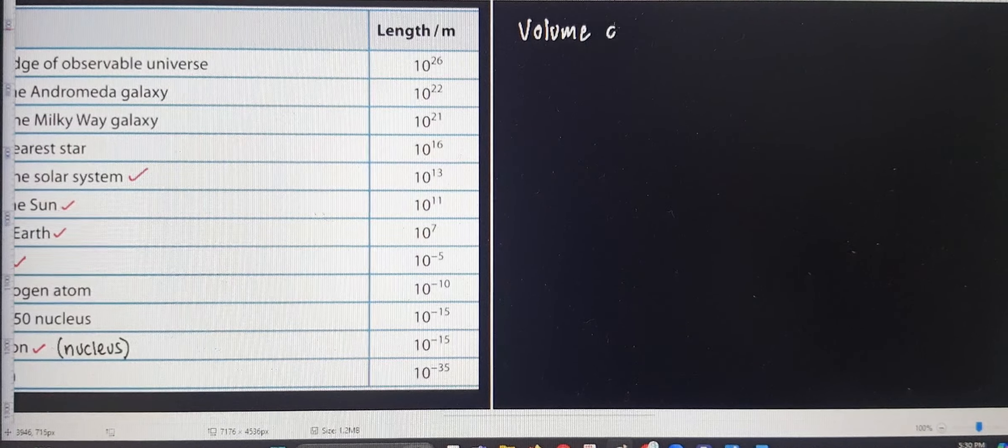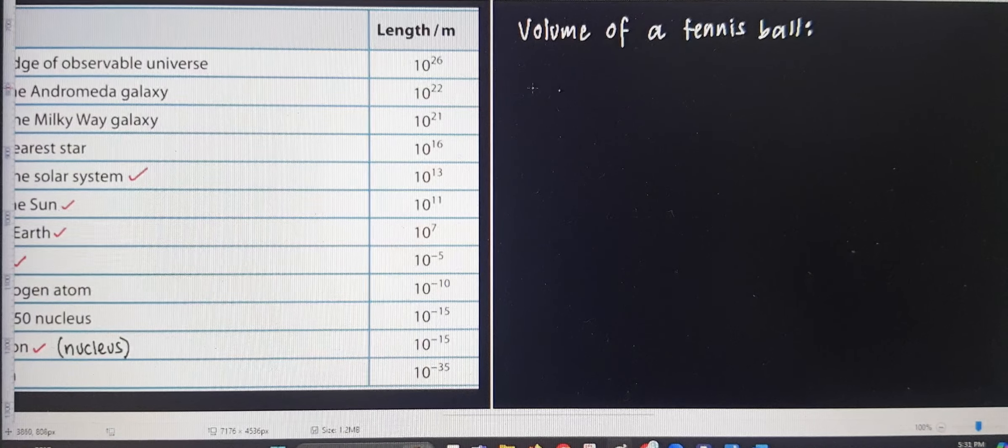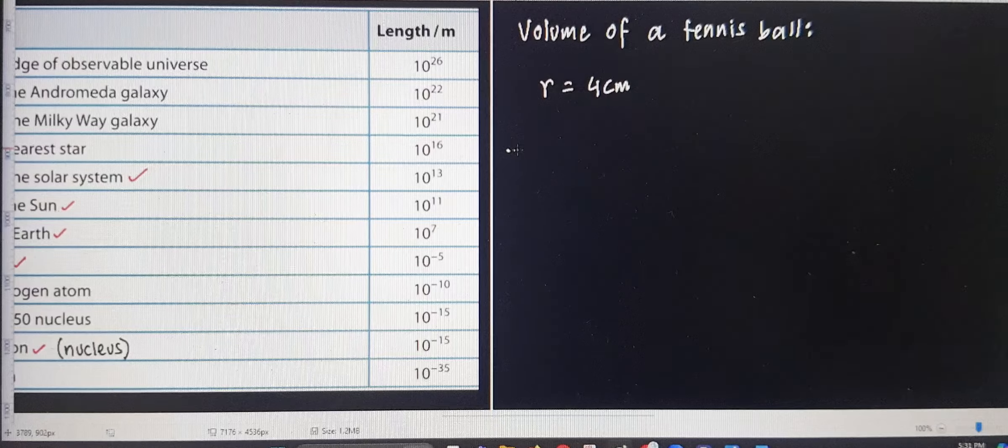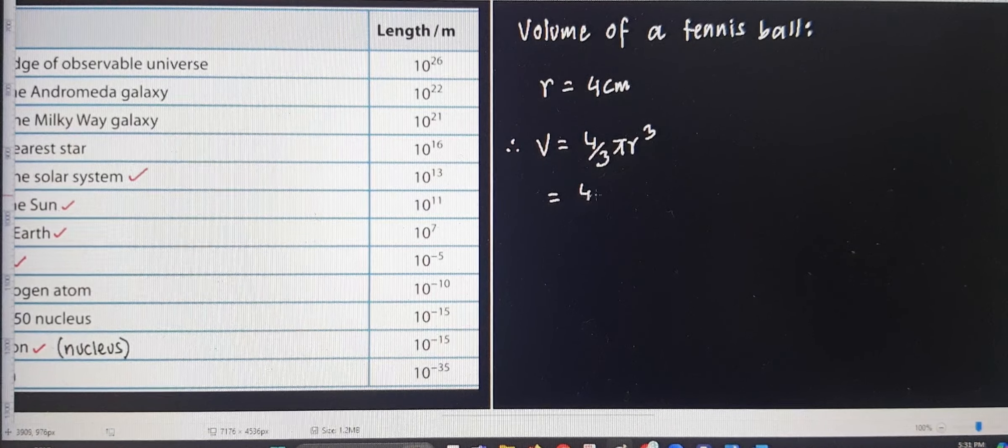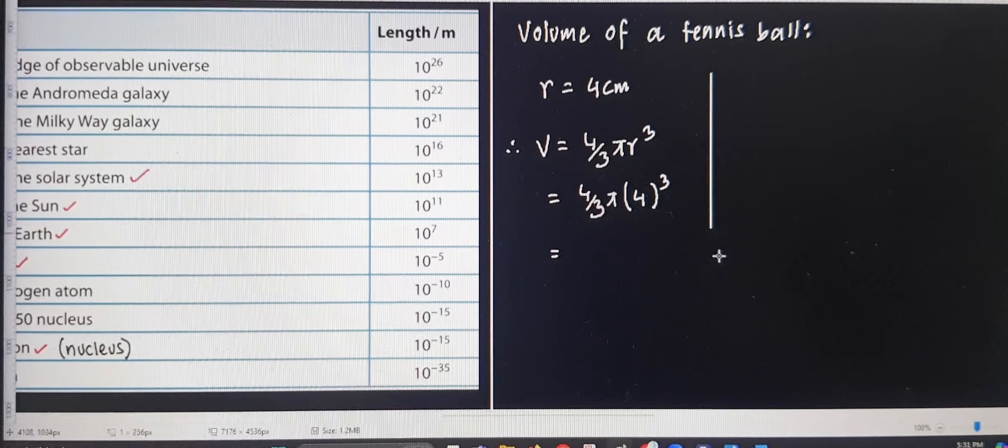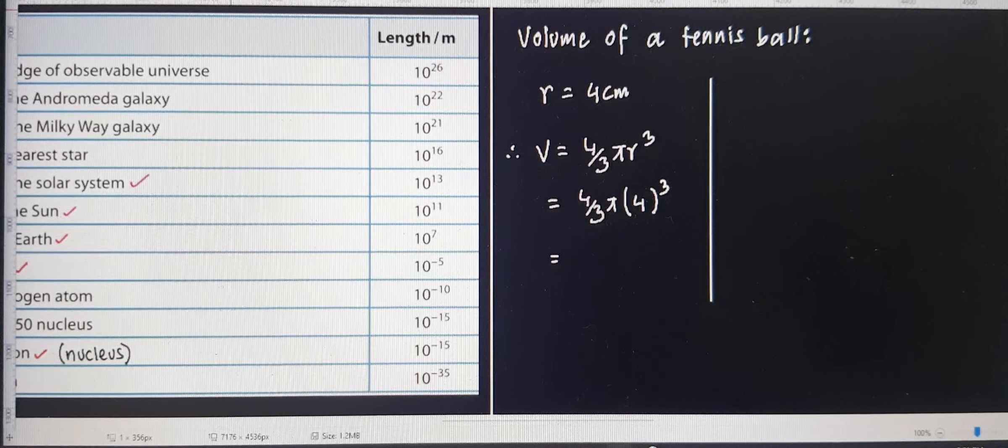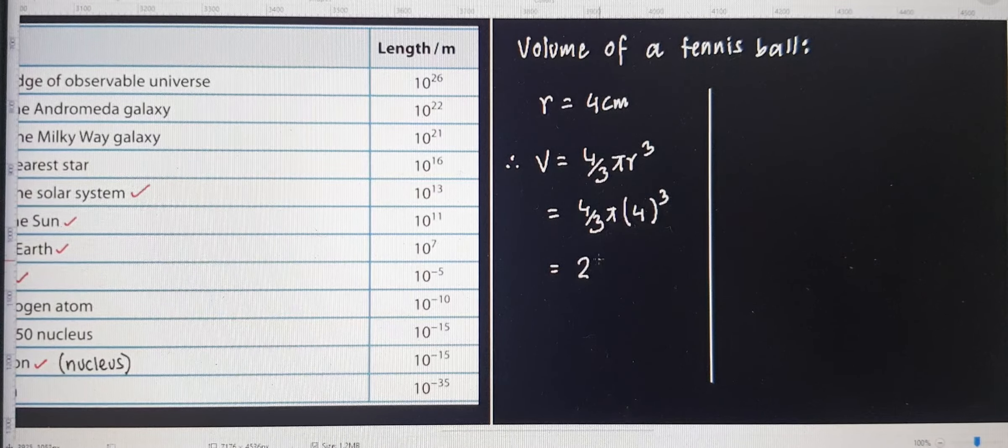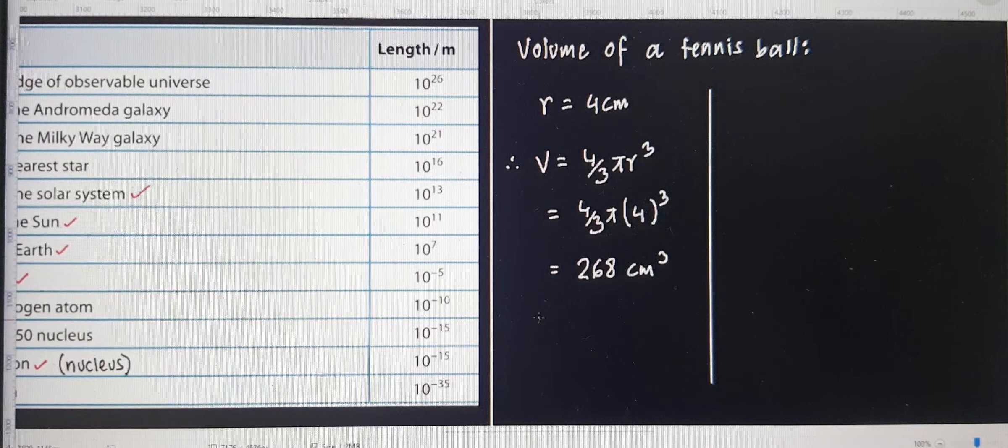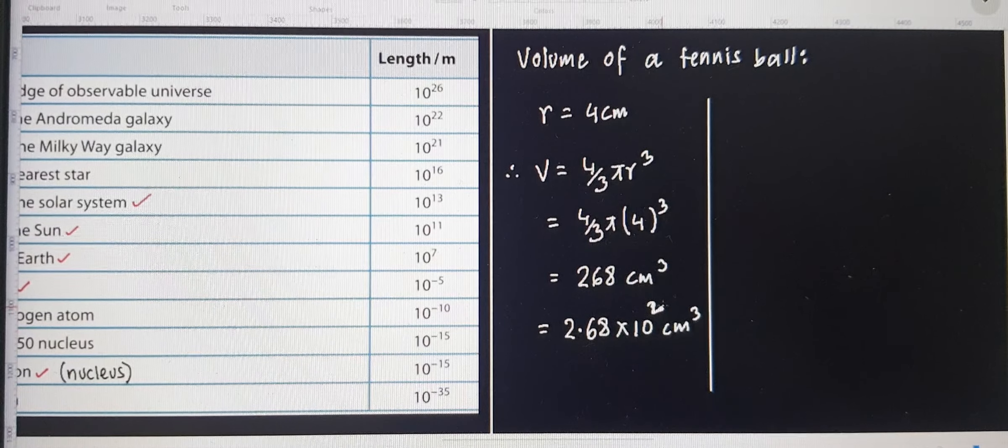Volume of a tennis ball. And if that is true, therefore the volume should be 4 by third pi r cubed, which should be 4 by 3, pi times 4 cubed. And how much is that answer going to be? Somebody help me out with this. Take out your calculator. How much is that? 268 centimeter cube. Right? So that comes to 2.68 into 10 squared centimeter cube. So my order of magnitude would be 10 to the power 2 cm cube.